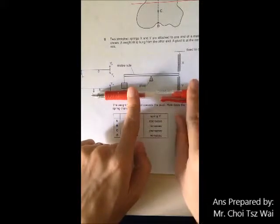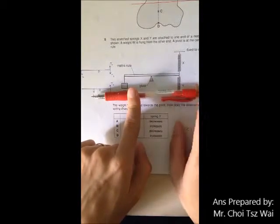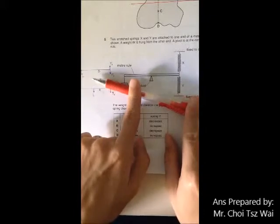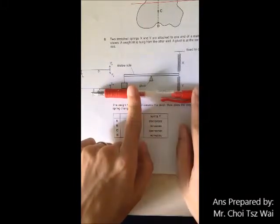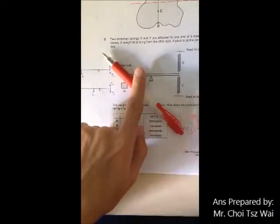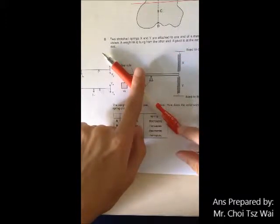So what happens is that the lever would tilt up, and hence the length of X would increase and the length of Y would decrease.